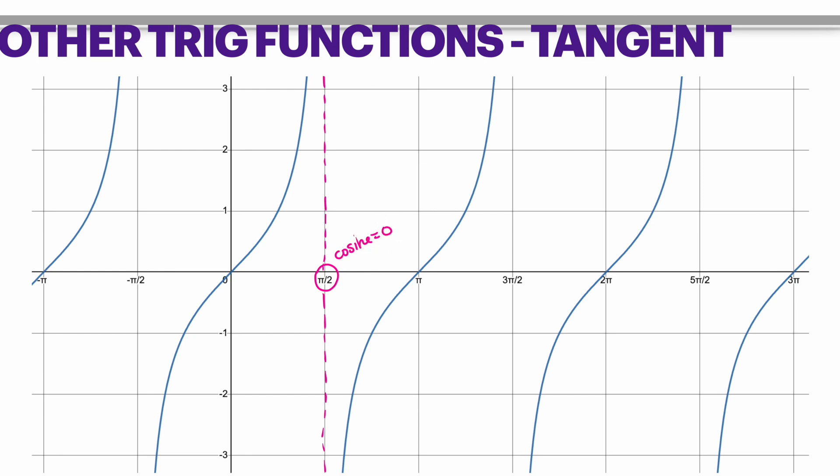Because if you remember, tangent is sine over cosine. So anytime cosine is 0, it is going to make the tangent function undefined. So wherever cosine would have been 0, at π/2, at 3π/2, at 5π/2, you will have asymptotes there.